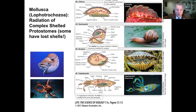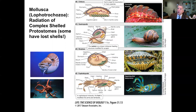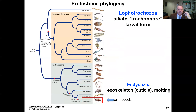Molluscs are also Lophotrochozoans with a remarkable radiation of shelled forms. Early diverging molluscs include limpets with a shell covering the top of the body, the coiled gastropod snails, and bivalves — clams and mussels with two shells. Then of course there are molluscs that have lost their shells entirely, such as squid and octopi.